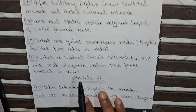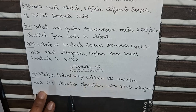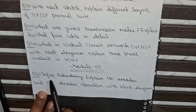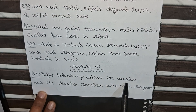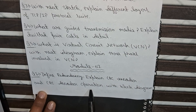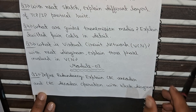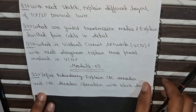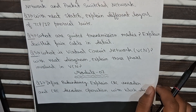Now moving to Module 2. The first question is: Define redundancy. Explain CRC encoder and CRC decoder operation with a block diagram.